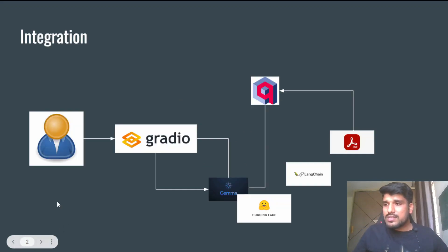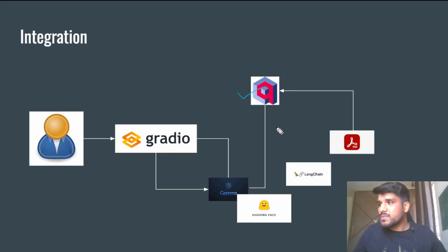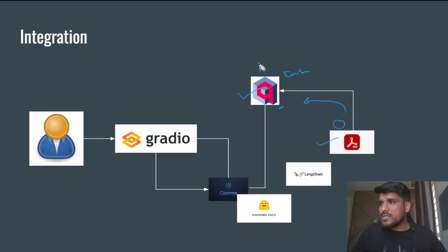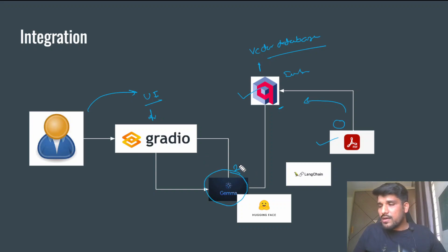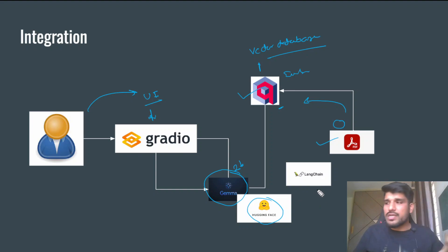These are some of the tools we are going to use in today's demo. We are going to use Qdrant, then a PDF — specifically the paper 'Attention Is All You Need' — and we are sending this paper to Qdrant where we are storing the embeddings. Qdrant is basically a vector database. Then we will use Gradio, which will act as a user interface. Then we will use the Gemma model — a 2 billion parameter Gemma model hosted on Hugging Face. For all integration and orchestration we are using LangChain as a framework.